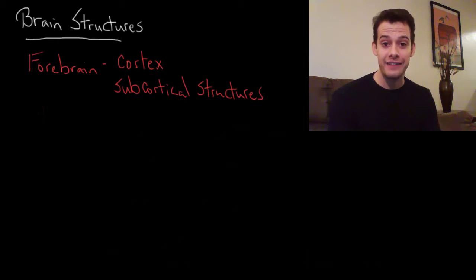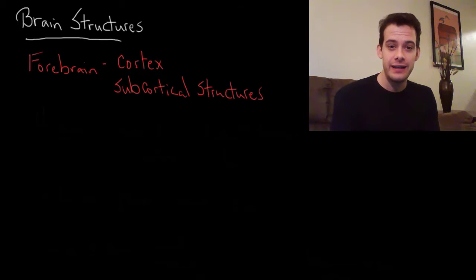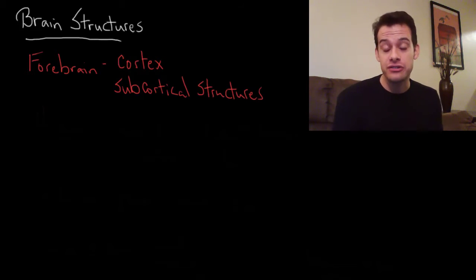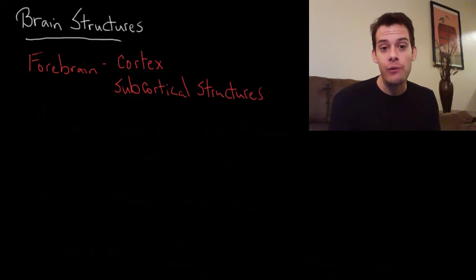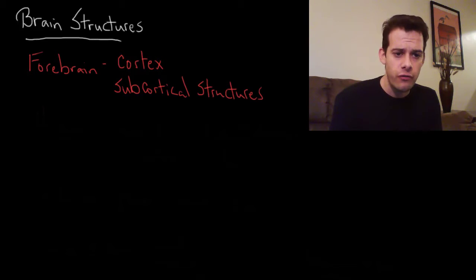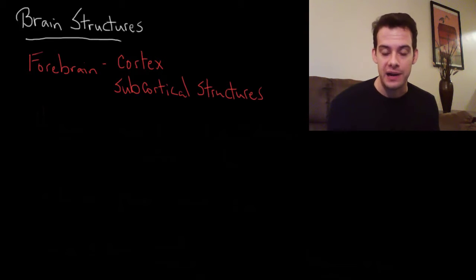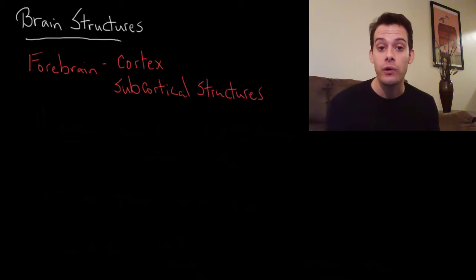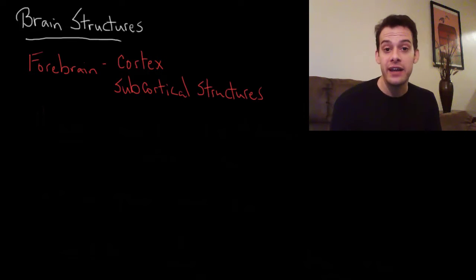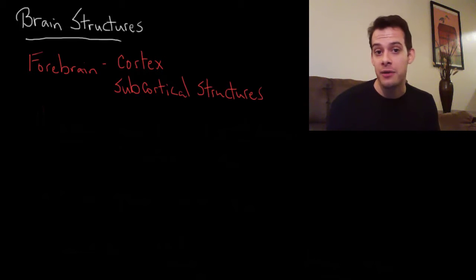Hi, I'm Michael Correa and this is Psych Exam Review. In this video we're going to continue looking at parts of the brain. In the last two videos we looked at the hindbrain and then the midbrain, and now we're looking at the forebrain. The forebrain can be divided up into two main areas: the cortex, which is the outer wrinkled surface of the brain, and the subcortical structures underneath. In this video we're just going to be looking at the subcortical structures and we'll talk about the cortex next time.